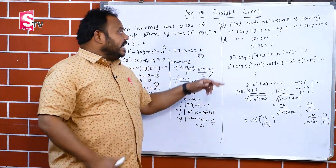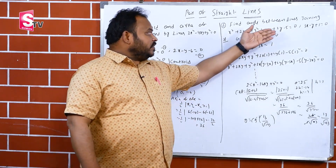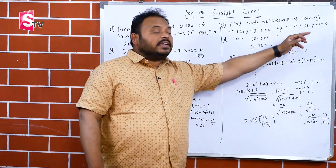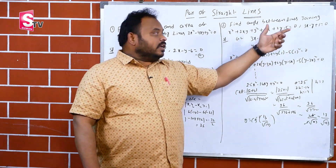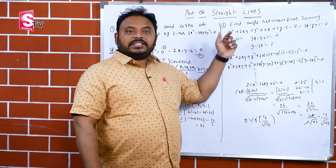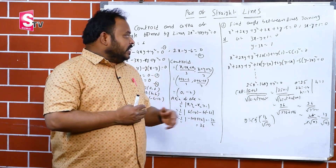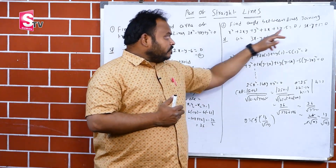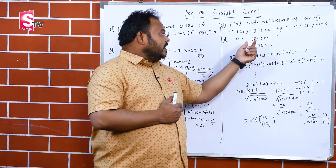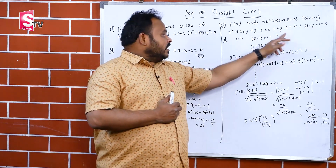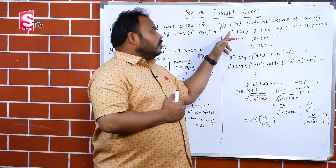Next problem: find the angle between the lines joining the origin to the points of intersection of the curve ax²+2hxy+by²+2gx+2fy+c=0 and the line 3x−y+1=0. We need to convert the second equation to the form y−3x=1, so that we can use it for homogenization.